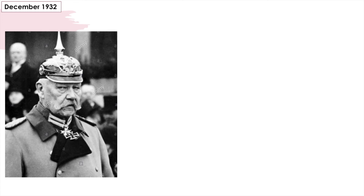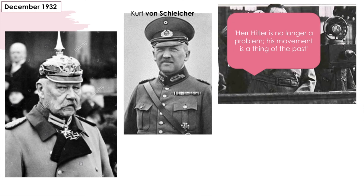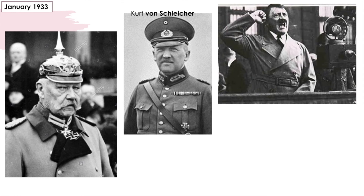Hindenburg was by now struggling to find a strong government, but he still refused to make Hitler chancellor. Von Schleicher told Hindenburg that the November election results showed support for the Nazis was fading, telling a visiting Austrian minister that Hitler was no longer a problem and that his movement was a thing of the past. In desperation, on 2 December 1932, Hindenburg appointed von Schleicher as chancellor. However, von Schleicher's chancellorship had no real political support. With Hitler and the Nazis now against him, von Schleicher was unable to govern — he had no majority in the Reichstag and no support amongst the public. He asked Hindenburg to suspend the constitution and make him head of a military dictatorship, saying the German army would support him with armed force, but Hindenburg refused. Rumours then began to circulate about Schleicher's plan for an army coup.